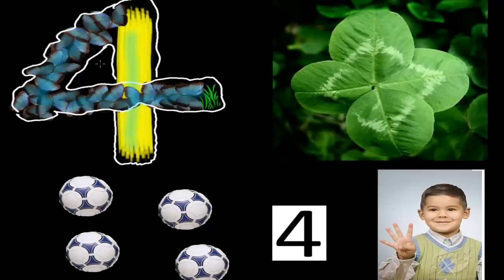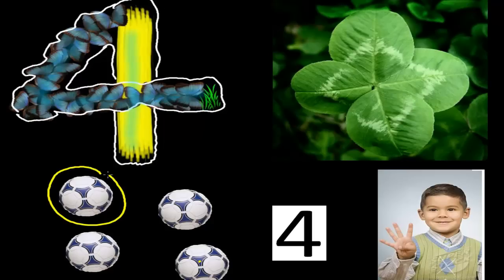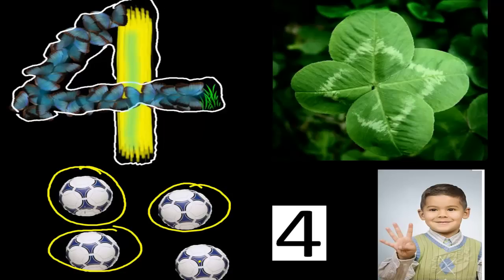Now in this video we are going to learn 4. What is 4? In the previous video we had 3 balls. Now see there is one more extra ball — 1 ball, 2 balls, 3 balls, and now one more extra ball. Suppose your dad gave you one more ball. Now all together you have 4 balls. There are 4 things — 4 balls here.